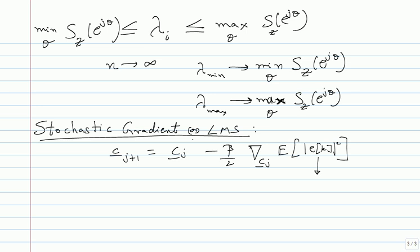What do we do when we don't know something in an expression? One convenient thing is to simply erase it - remove the expectation operator. You can still take the gradient of |e_k|^2 with respect to c. This is the key idea in the LMS or stochastic gradient algorithm: since you cannot compute the expectation, you simply remove it. The reason this makes sense: if you observe one realization of a random variable, your best LMS estimate for the mean is the observation itself.